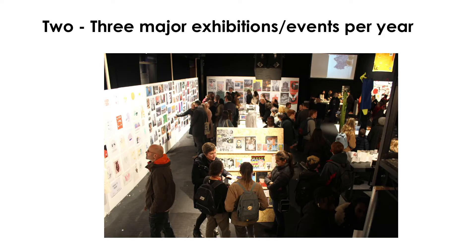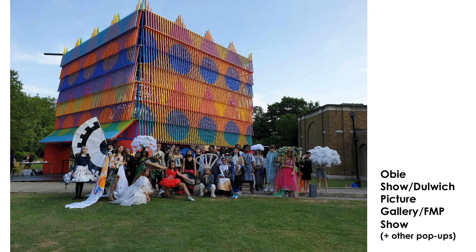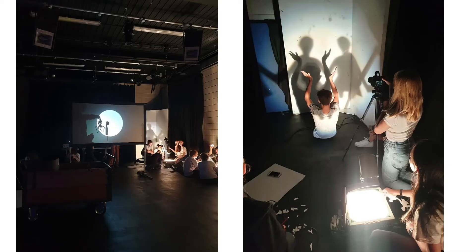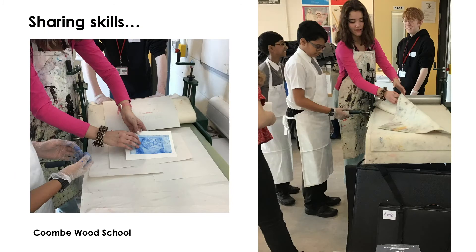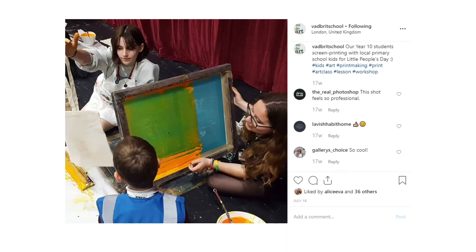To elaborate on some of those opportunities: we have two or three exhibitions a year that students are involved with. Some are at school — we have a whole department exhibition in our OB show — and we also have an exhibition purely for Key Stage 4 students which for the past 10 years has happened at Dulwich Picture Gallery, which has been fantastic. This year we've moved it to Somerset House, building a new partnership, and our students will be presenting a wearable art project there. We do lots of sharing of skills and collaboration, and we've been involved in projects such as Little People's Day every year, where students work with young people that come in.